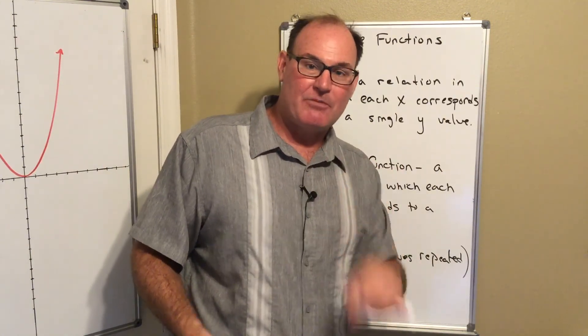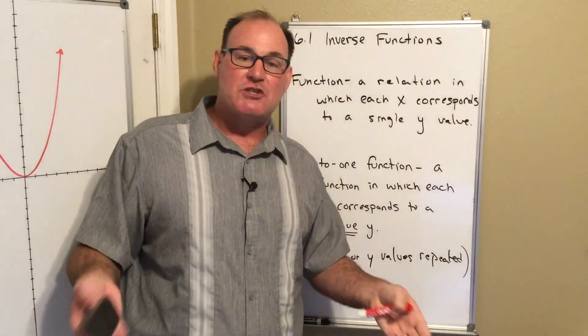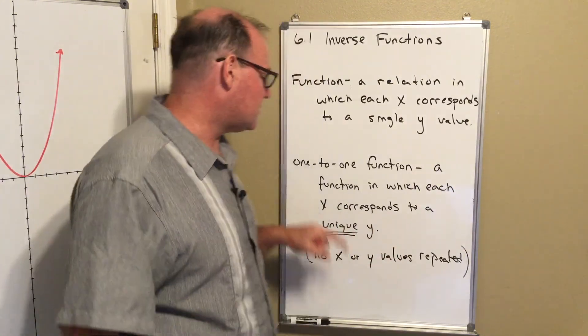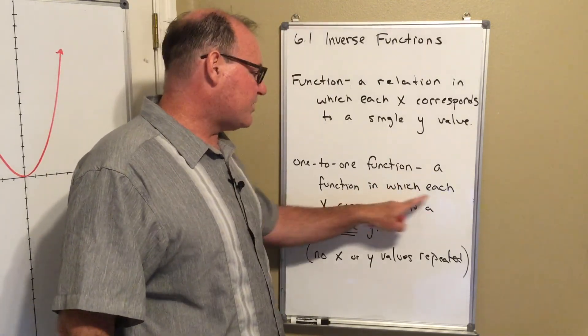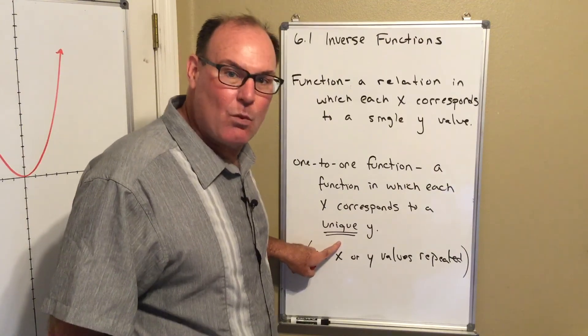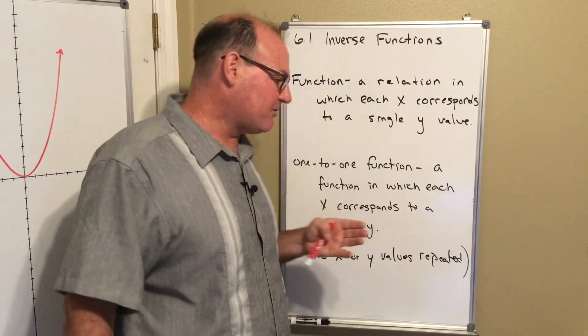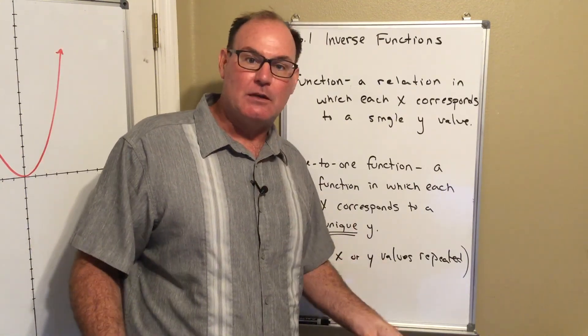Now, the specific type of function we're going to talk about is what's called a one-to-one function. So as you're transcribing this into your notes, if you need to, pause the video, rewind it, whatever you need to do. A one-to-one function is a specific type of function in which each x value corresponds to a unique y value. So what that means is in our one-to-one function, no x or y value is repeated.